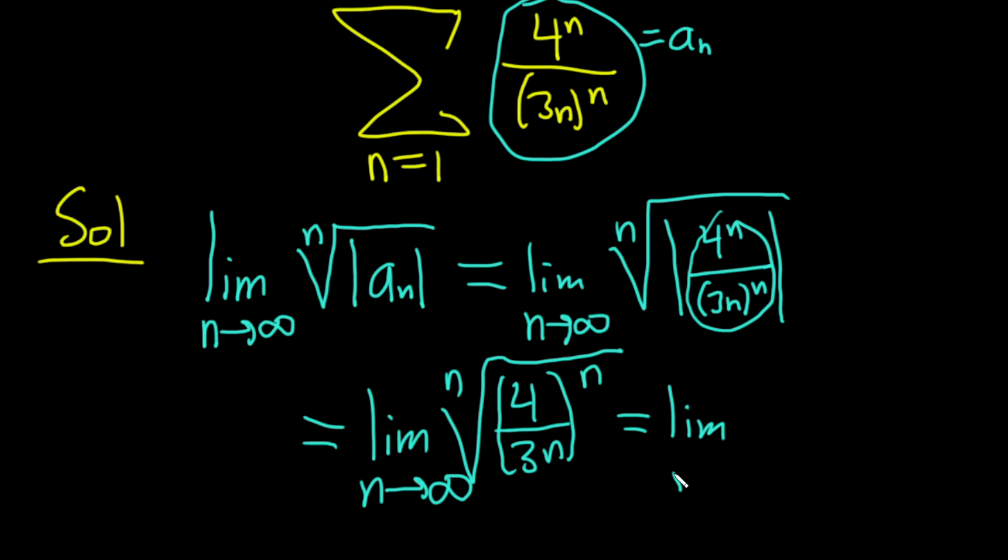So we get the limit as n approaches infinity of 4/3n. And this is going to approach 0 because n gets really big. The fraction gets really small as n gets bigger. So it approaches 0.